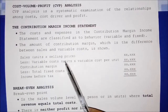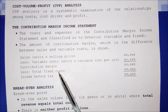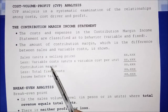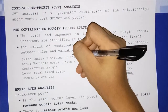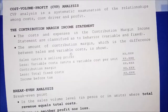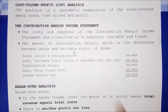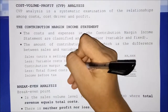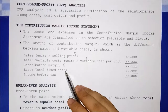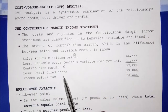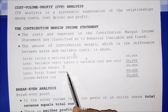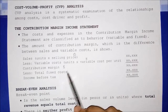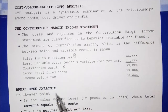The contribution margin, which is the difference between sales and variable cost, is the amount that contributes to profit. For example, if the selling price per unit is 10 and the variable cost per unit is 5, the contribution margin per unit is 5. This means for every unit sold, 5 pesos contributes to profit.